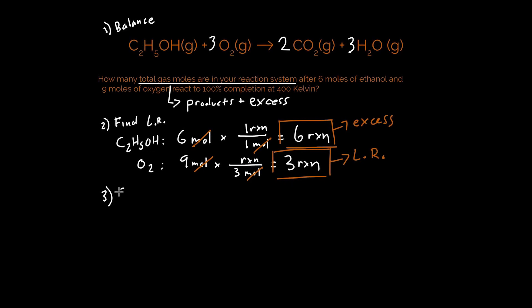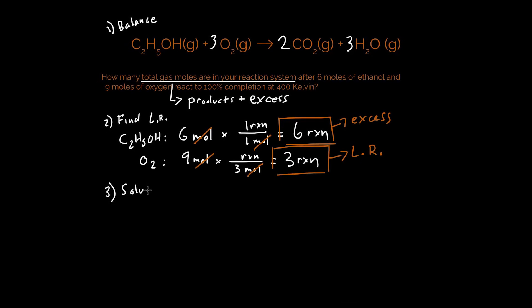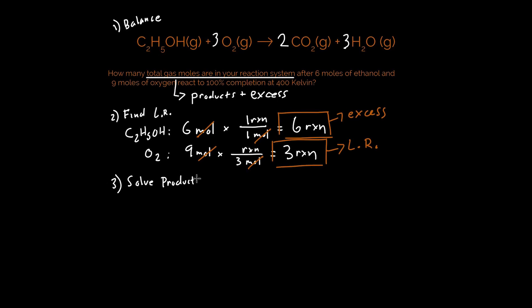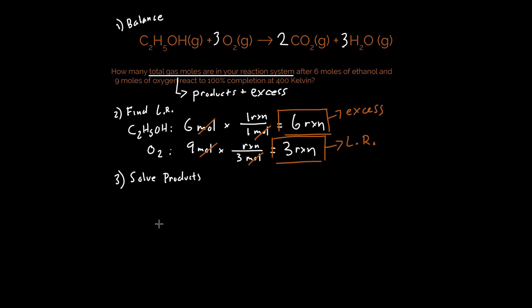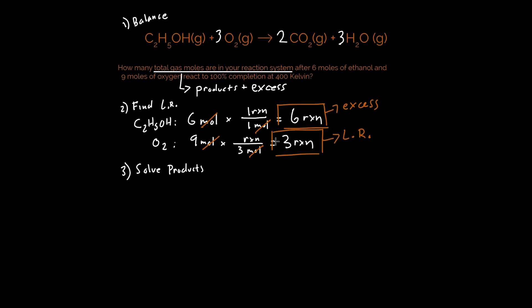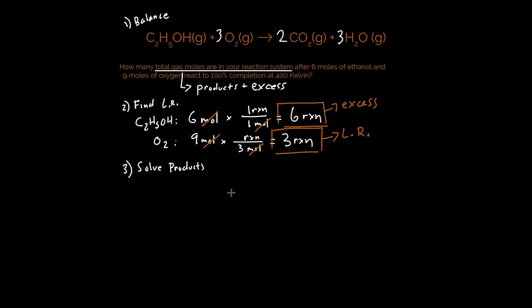Step 3 is going to be to solve for the output of this chemical reaction, which I like to say is just solving for the amount of products that I'm forming. The good news is we already did most of the work here. We determined that we can run 3 reactions with the given amount of oxygen and ethanol present.